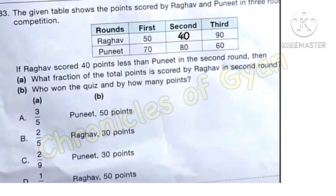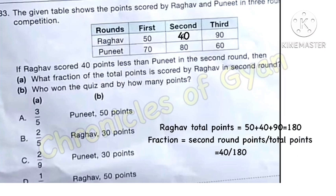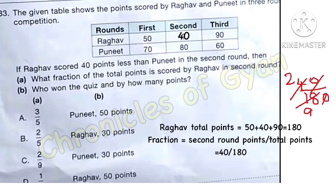Now we can calculate the fraction. Raghav's total points: 1st round 50, 2nd round 40, 3rd round 90 — so 50 + 40 + 90 = 180 total points. The fraction of 2nd round points out of total is 40 by 180, which simplifies to 2 by 9.